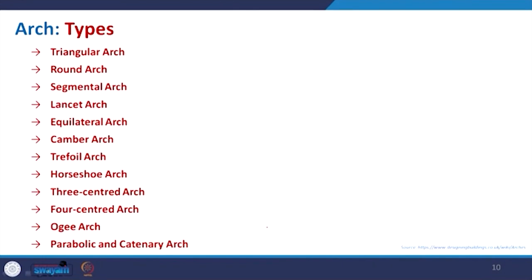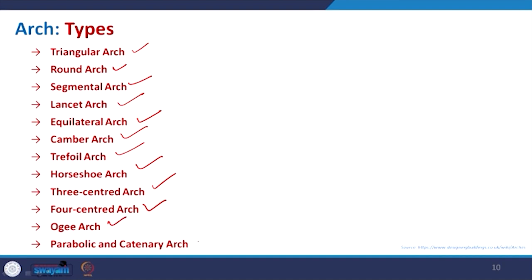The type of arch is based on the geometry. There are quite a number of different types, but most commonly we classify arches as: triangular arch, round arch, segmental arch, lancet arch, equilateral arch, camber, trefoil, horseshoe, three-center, four-center — you can even increase to five-center or six-center arches — then the ogee arch, and one of the important ones: the parabolic and catenary arches.